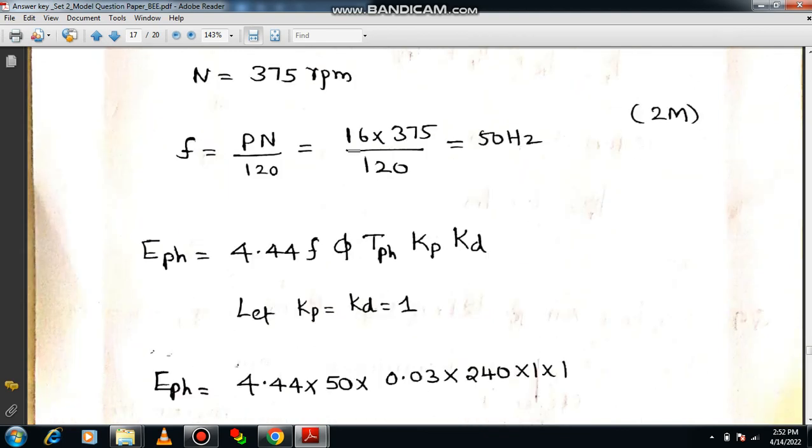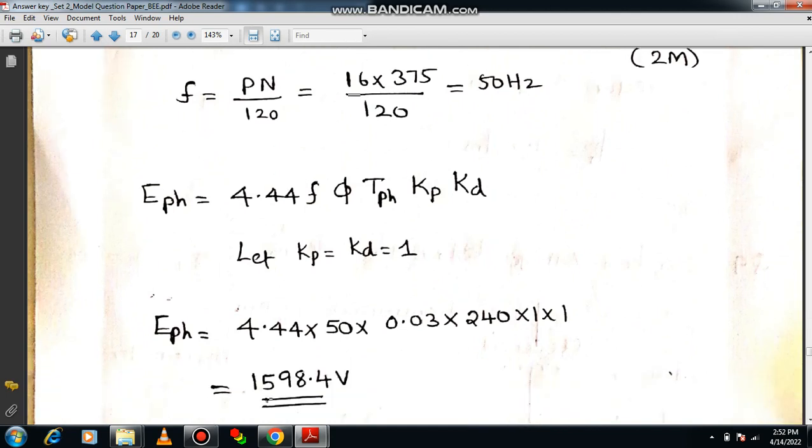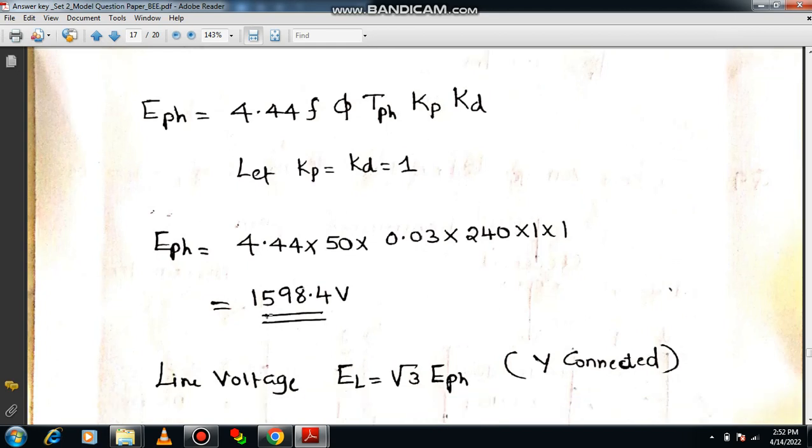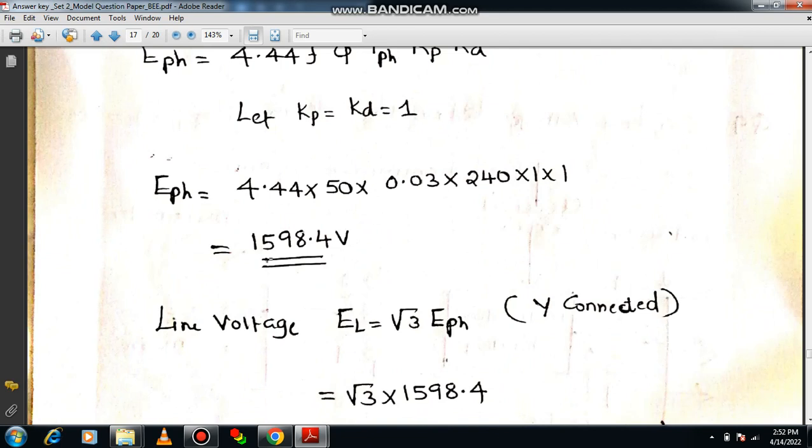Let me write the equation for EMF. E phase, EMF equation per phase: 4.44 F phi T phase Kp and Kd. This is regarding pitch factors and distribution factors. That you can assume it as 1, not given in the data. E phase equal to, after substituting you are able to get the following values. E phase will be 1598.4 volt.